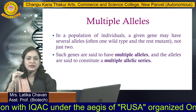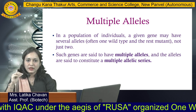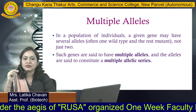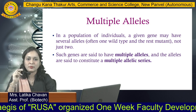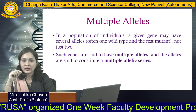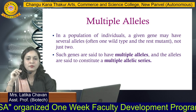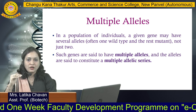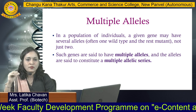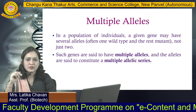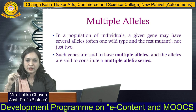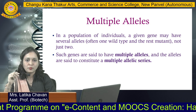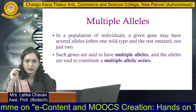Now coming to our actual multiple alleles topic. In case of humans we have different kinds of blood groups — a person may have blood group A, B, AB, or O. We are going to study the ABO blood group system which comes under multiple alleles. There is one more concept called co-dominance that I will tell you subsequently.